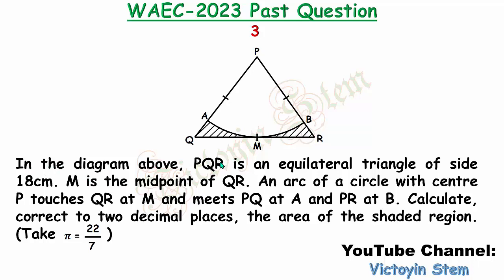In the diagram above, PQR is an equilateral triangle of side 18 centimeters. M is the midpoint of QR. An arc of a circle with center P touches QR at M and meets PQ at A and PR at B. Calculate correct to two decimal places the area of the shaded region. This question expects us to take pi as 22 over 7.